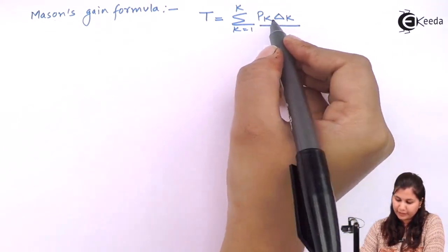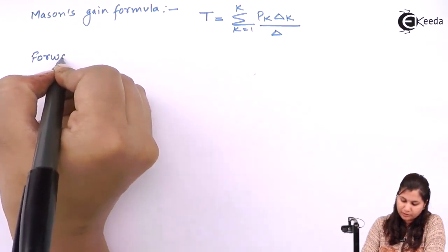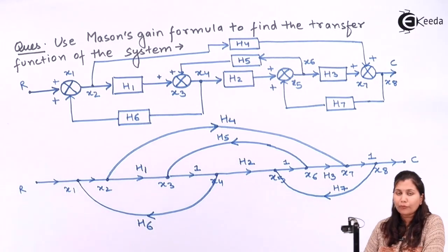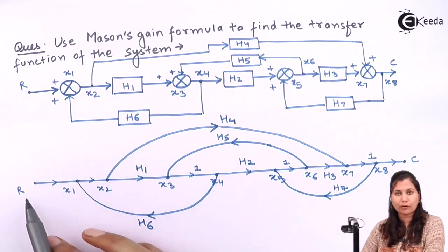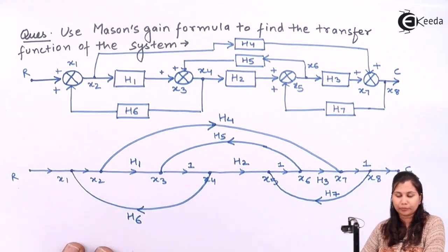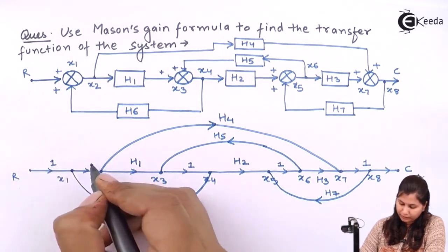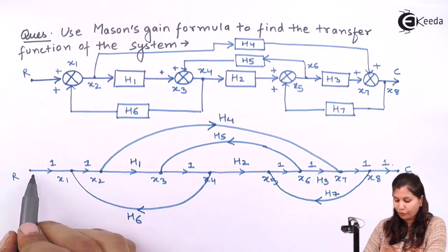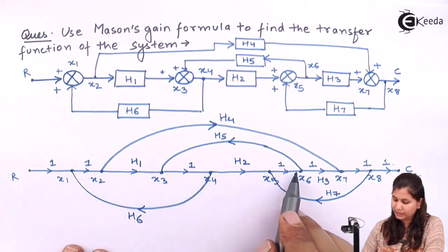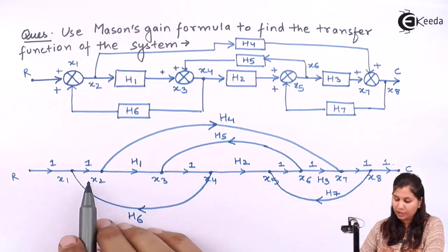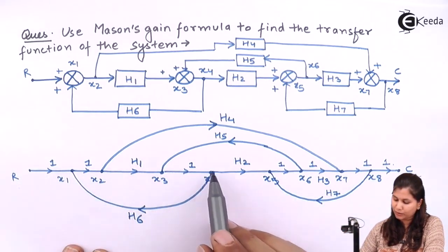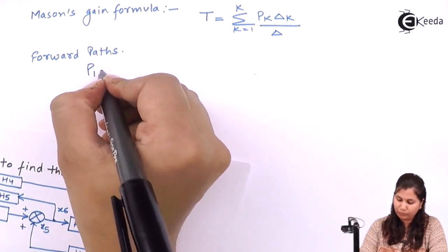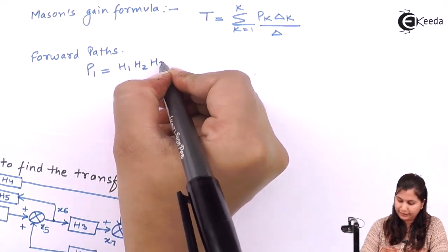Let's first identify the forward paths in the signal flow graph. A forward path is a path which originates from the input node and terminates at the output node. The first forward path goes through X1, X2, X3, X4, X5, X6, X7, X8, and C, giving us a gain of 1·1·H1·1·H2·1·H3·1. So P1 equals H1·H2·H3.